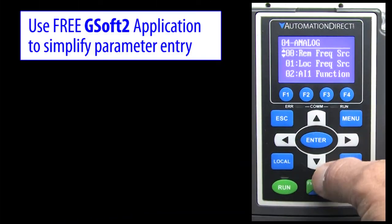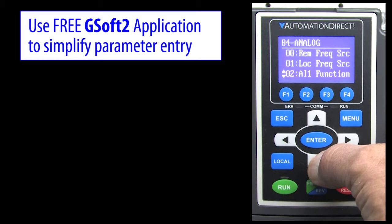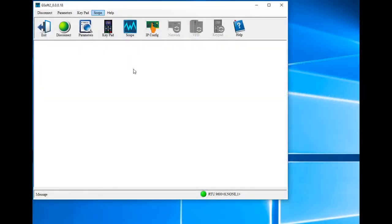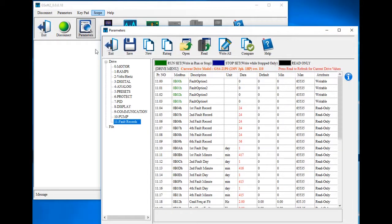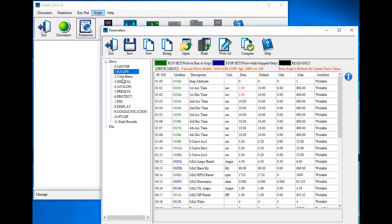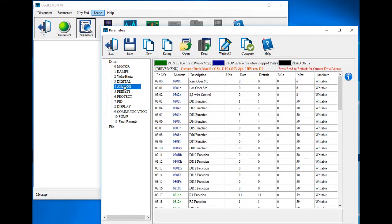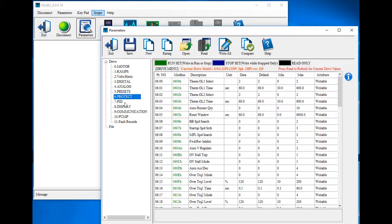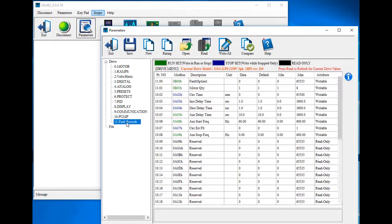While we did all of the analog input videos using keypad entry, remember that all of that could have been done using the free GSoft 2 software that you can download from AutomationDirect.com. There's a whole separate set of videos that show you step-by-step exactly how to use that GSoft 2 application to configure and operate the drive.